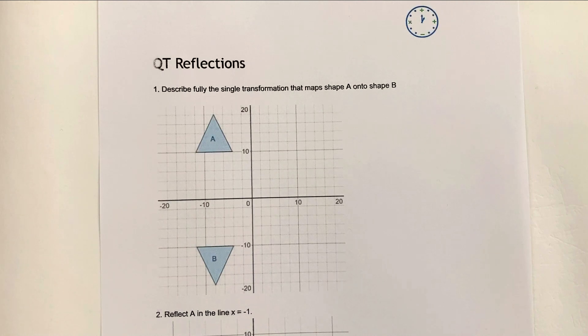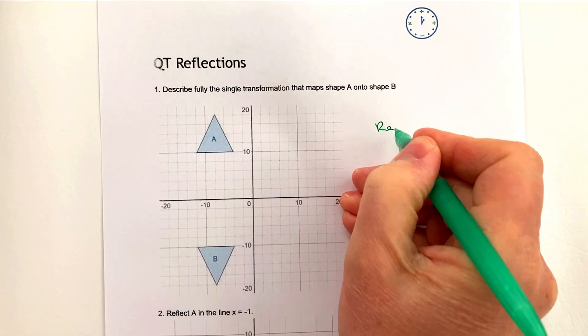Hi, in this video we're going to look at reflections on xy grids. It forms part of the playlist where we're looking at transformation. In this particular one, it says describe fully the single transformation that maps shape A onto shape B. Please download the worksheet and have a go at this question for yourself.